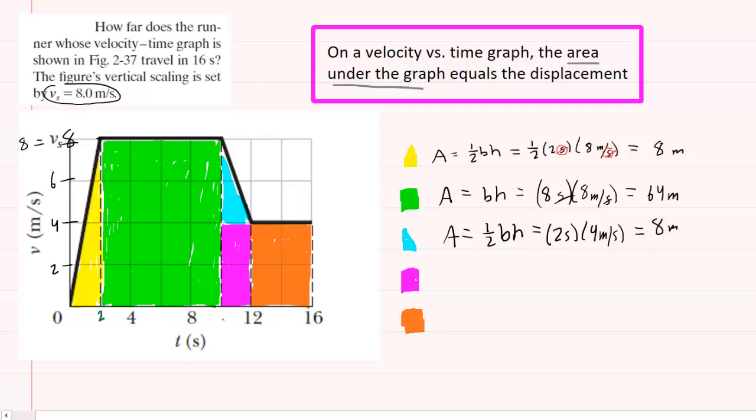Looking at the magenta rectangle, the base is two seconds, and the height is four meters per second. And that also works out to be eight meters. And then the orange rectangle here has a base of four seconds multiplied by the height of four meters per second. And that works out to be 16 meters.